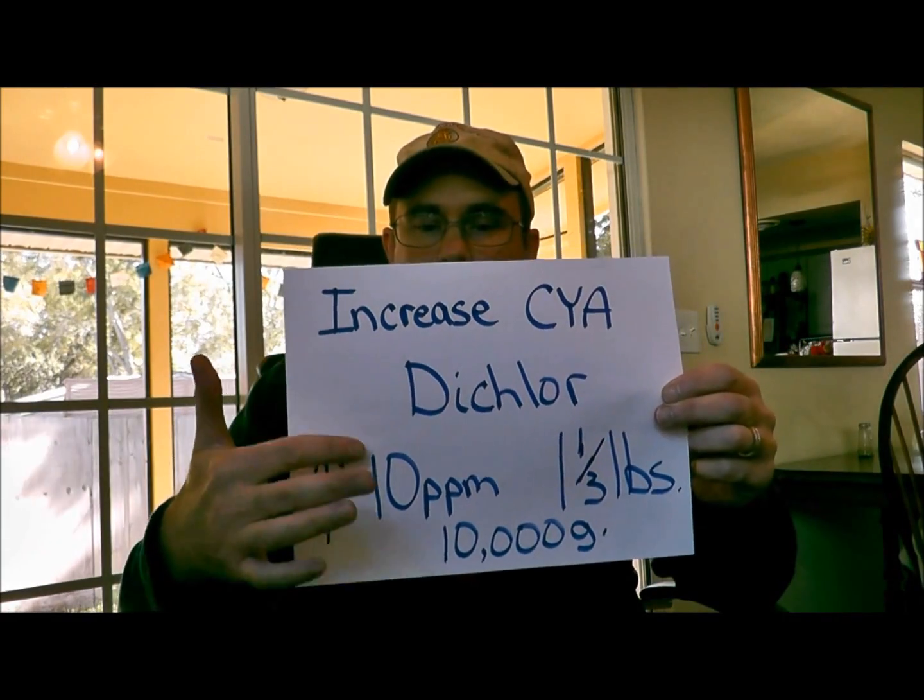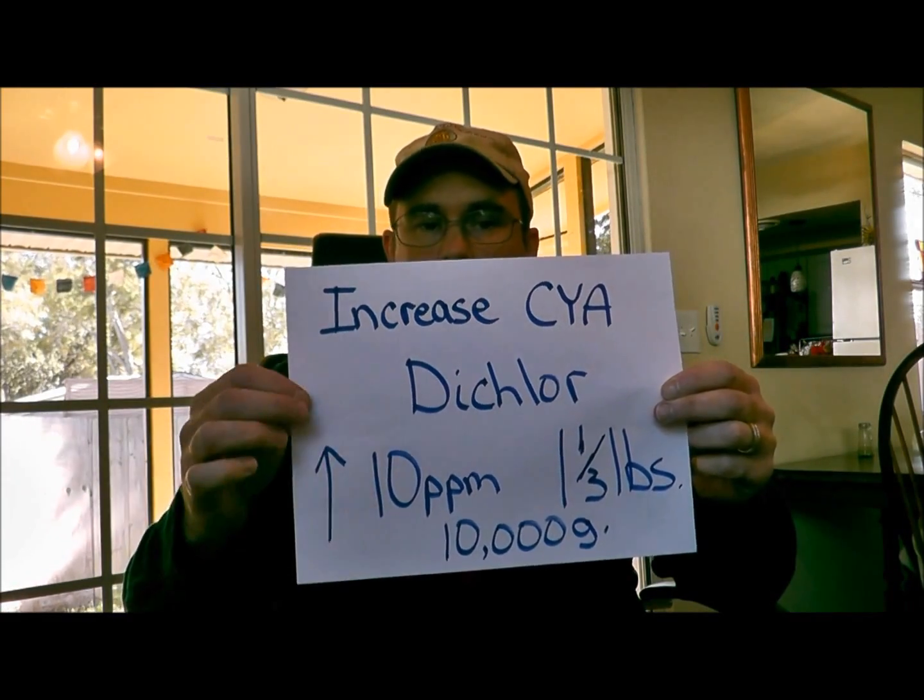It's fairly simple — that's your baseline right there, and that's a way that you can increase your cyanuric acid. Now if it's too high — and too high, in my opinion, is once you get into the 80, 90, 100 range, especially 120 or 150 — then it's time to do a partial drain and refill. This is the only way to effectively reduce your cyanuric acid.